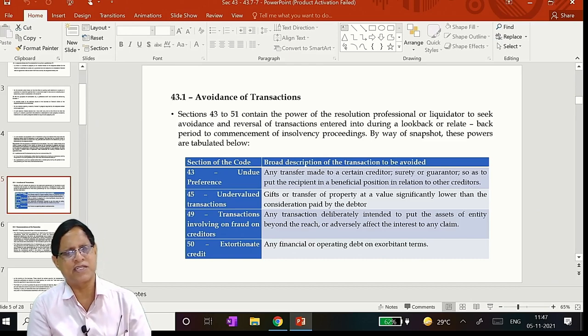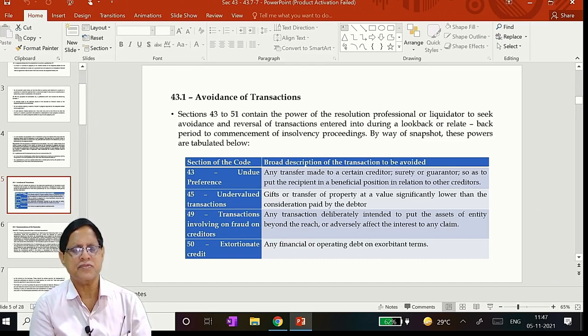And now what is this section 43? Snapshot. Any transfer made to a creditor, surety or guarantor, so as to put the recipient, that creditor, in much better position, beneficial position, in relation to other creditors. Understand?